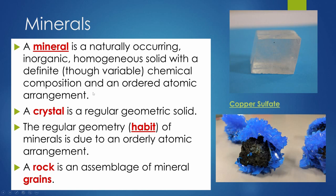In order to have an ordered atomic arrangement, that means you're forming crystals. Sometimes you'll see a mineral where it's hard to tell there are crystals, but if you look at it at a really microscopic level you can still see the crystals forming.